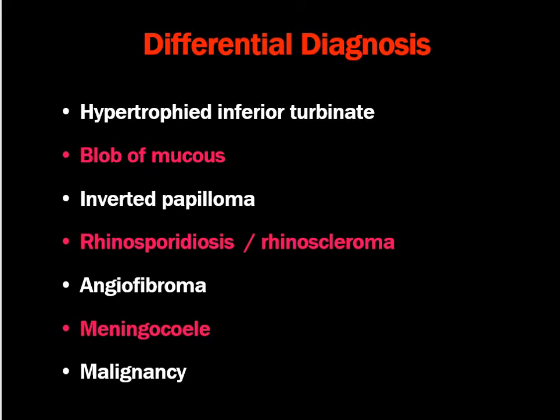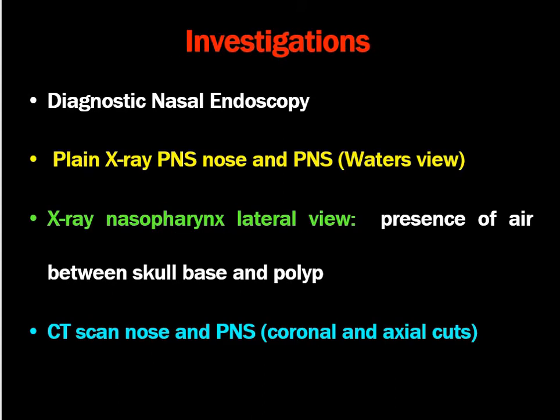What are the differential diagnoses of unilateral nasal mass? They include hypertrophic turbinate, blob of mucus sometimes seen in children, papilloma in elderly populations, rhinosporidiosis, rhinoscleroma in young adults, angiofibroma especially in young males, and malignancy in adults. Also meningoencephalocele, which is usually a congenital condition, has to be differentiated from antrochoanal polyp.